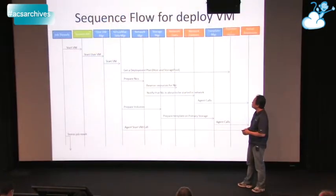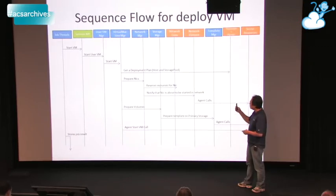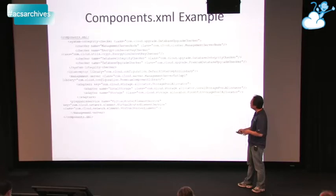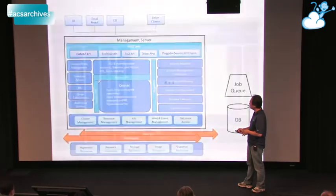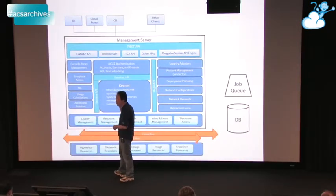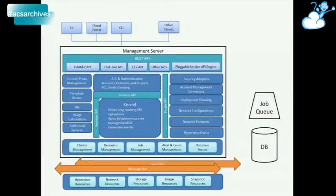Question: If something happens to the management server at some point through this process, what happens? Answer: Inside the virtual machine manager, as it goes through each of these steps, it writes down the step that it's at — basically a checkpoint. If something fails, underneath in CloudStack there is cluster management where someone is responsible for notifying other nodes in the management cluster that a node has gone down, and someone will go back and roll back those operations.